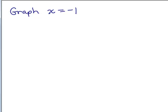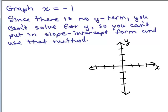How would you graph x equals negative 1? Think about that for a minute. Put this video on pause and graph that line. Hopefully you notice that there's no y term, which means you can't solve for y. So you can't put it in slope intercept form to use that method.